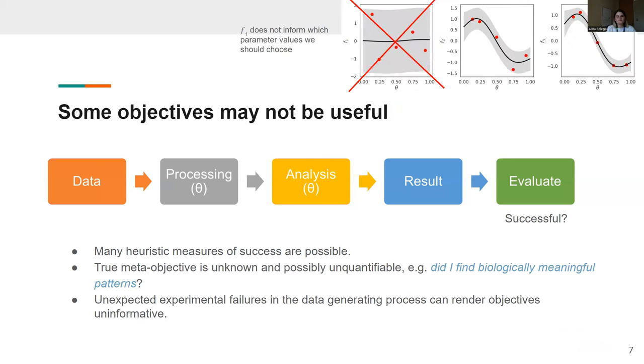And because we're dealing with real data, unexpected experimental failures in the data generating process can sometimes render objectives that we have chosen uninformative. So, in this cartoon above, we have a couple of objectives. And the first one doesn't really inform us which parameter values we should choose. So we could really discard it in our optimization procedure.